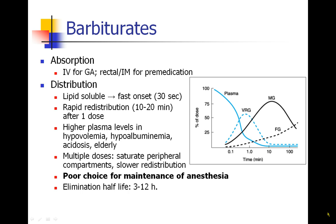The distribution of these drugs is described by the classic graph from the previous lecture. Any lipid-soluble drug will have a very fast onset as the drug leaves the plasma, quickly crosses the blood-brain barrier, and gets into the vessel-rich group. After only about 10 to 20 minutes, the drug has completely left the brain after a single dose and redistributed into peripheral tissues, and the patient will show clinical recovery. In patients who are hypovolemic, have low protein levels, are acidotic, or are elderly, plasma levels will be higher and the drug will have a more prolonged and pronounced clinical effect.